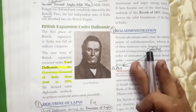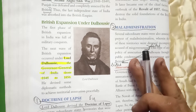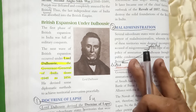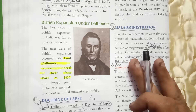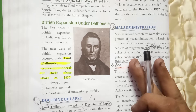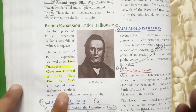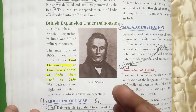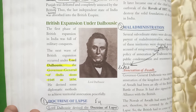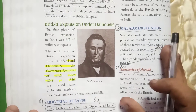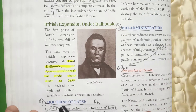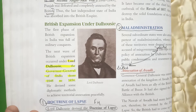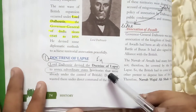Regarding British expansion under Lord Dalhousie: in the first phase, the British expanded their empire greatly through battle. In the second phase, Dalhousie used diplomatic methods to bring several kingdoms under British control. The most important of these was the Doctrine of Lapse. Lord Dalhousie devised the Doctrine of Lapse to annex subordinate state territories already under British control, wanting them under the direct command of the British.